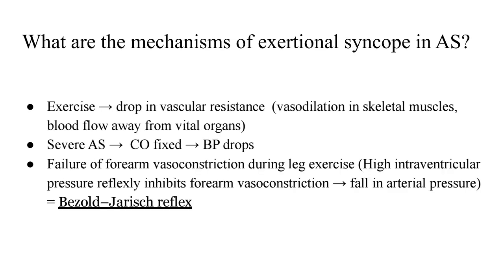What are the mechanisms of exertional syncope, one of the first mechanisms in severe aortic stenosis? When a person exercises, there is a drop in vascular resistance in order to increase blood supply to the skeletal muscles by way of vasodilatation. This leads to diversion of blood flow away from the vital organs. This happens in concert with the fact that severe aortic stenosis is associated with a fixed cardiac output and a drop in blood pressure.